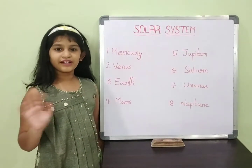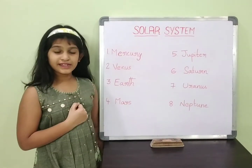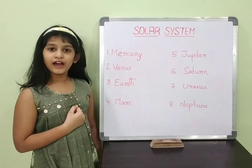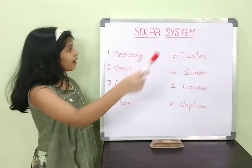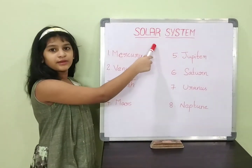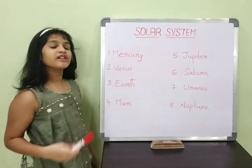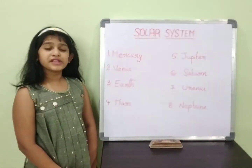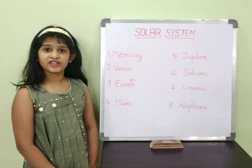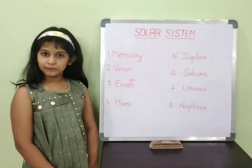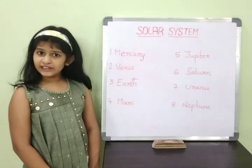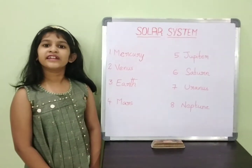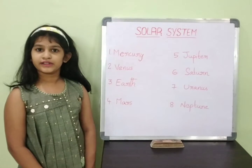Hi everyone. My name is Sun. Today I am going to explain to you about the solar system. The solar system is made up of the sun, eight planets and satellites, and other heavenly bodies.